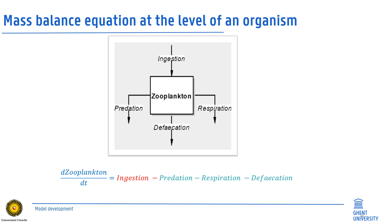Or in a more realistic example, carbon content change in zooplankton is the net result of one red import flow by ingestion and three green export flows related to respiration, defecation and predation.